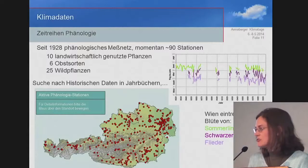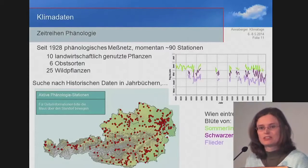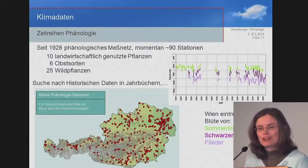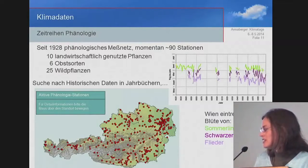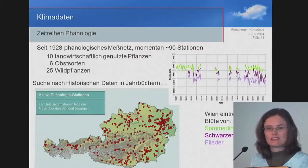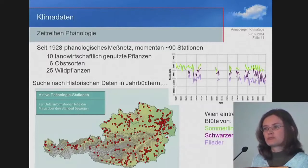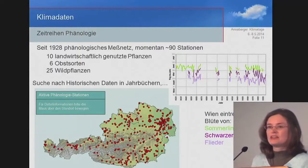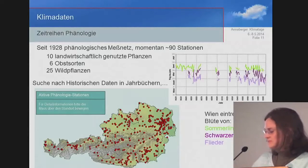Phenology has already been a topic. We have 90 stations forming a monitoring network. Various plants are monitored on a regular basis — ten agricultural, six fruit, and 25 wild plants. There are gaps, but over the last few years we see a continuous series of measurements. We measured wine data in diverse abbeys and chronicles, looking into the past to extend the time series. This is part of a EumetNet project, PEP725. An international database on a European scale is available.